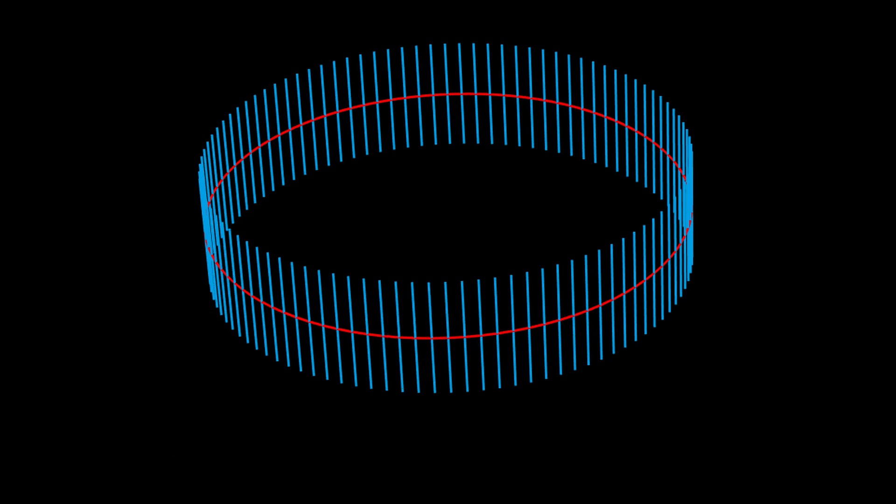The cylinder is orientable because there is a consistent notion of clockwise and counterclockwise on its surface. This is equivalent to having a consistent notion of a normal to the surface, or a consistent notion of left and right on the surface.